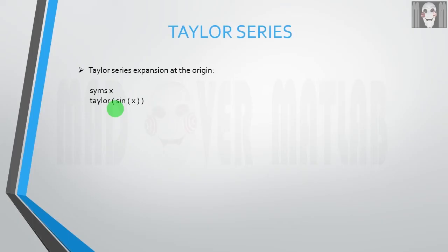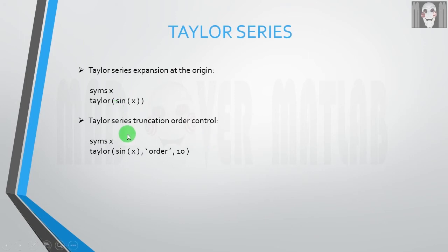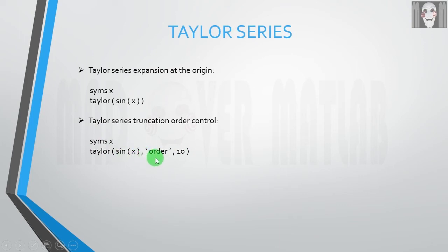First we have to declare x as a symbol, then use the taylor keyword followed by parenthesis, then the function, and then you have to write the string 'order' followed by the maximum order that you wish to bring into your expansion.